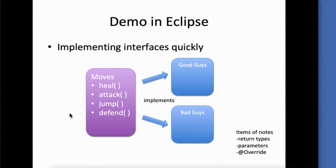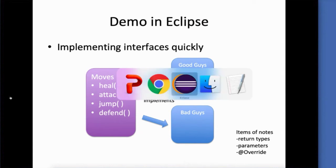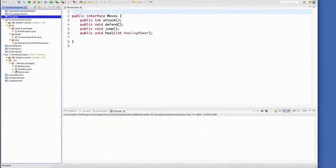And a real quick demo that I want to show you in Eclipse. I have an interface already created. It's called Moves, and we're going to implement it onto two classes, GoodGuys and BadGuys. Just a couple of things I want to show you about that as we implement that. Here's my interface in Eclipse, and I already have all my methods typed out.